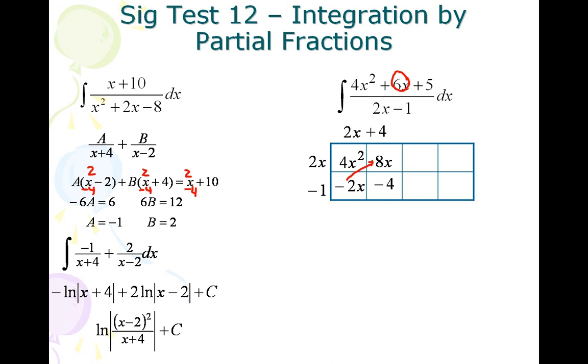Negative 4 plus something here has to equal 5, so that's going to be 9. That's my remainder. So now I'm going to have 2x plus 4 plus 9 over 2x minus 1.